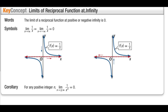Limits of reciprocal functions at infinity. The limit of a reciprocal function at positive or negative infinity is zero. To the right, 1/x levels off at zero; to the left, 1/x levels off at zero. For any positive integer n, the limit as x approaches positive or negative infinity of 1/x^n equals zero. So 1/x², 1/x³, and so on all level off to zero.